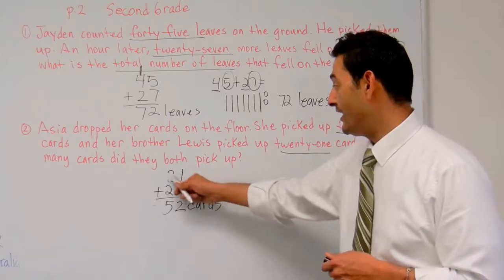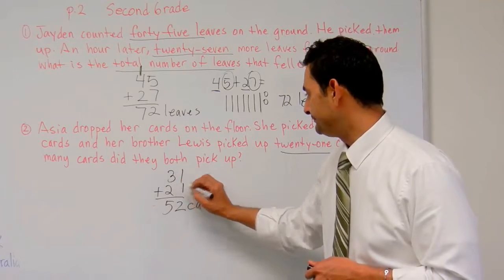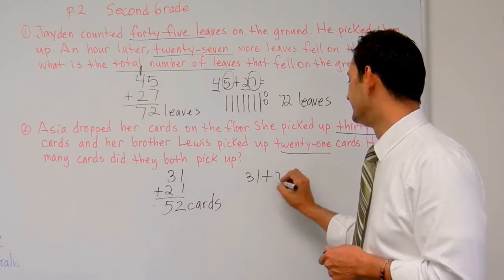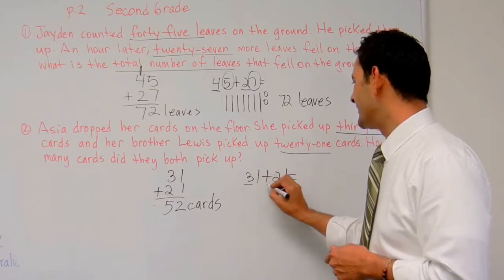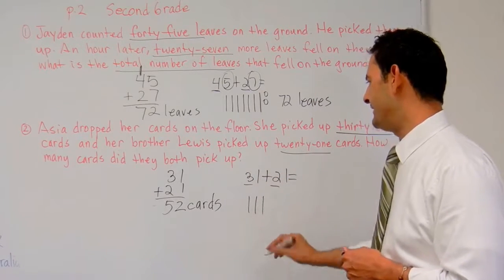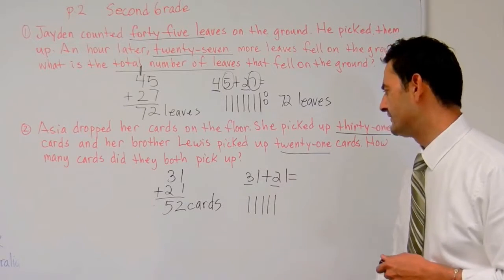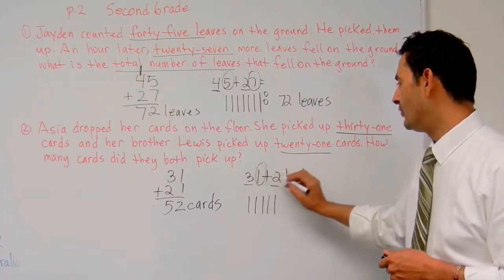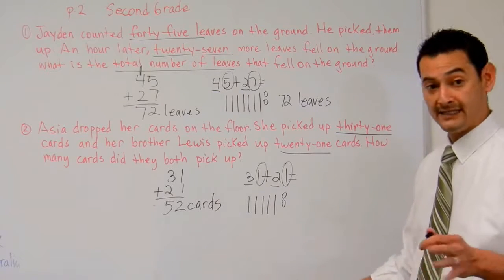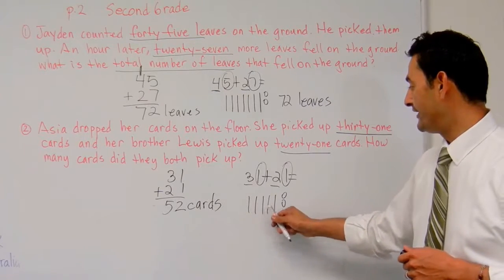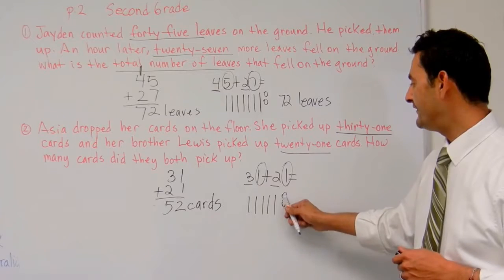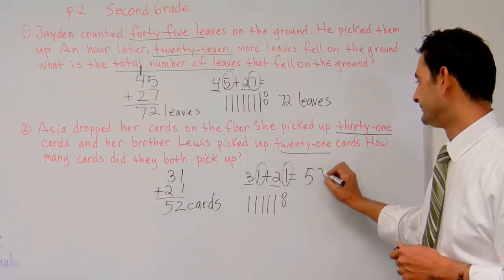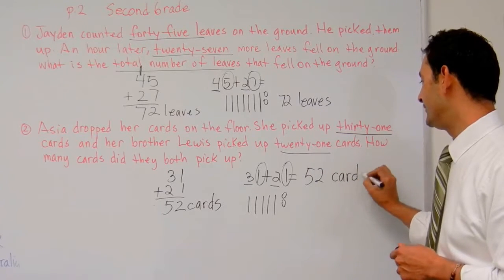Or, we can go ahead and make bundles of 10. So, let's see. Let's make bundles of 10 here. I've got 3 bundles of 10. Here, I've got 2 bundles of 10. And here, I've got 1 one and another 1 there. Make 2 ones. So, let's count. 10, 20, 30, 40, 50. 51, 52. So, I've got 52 cards.